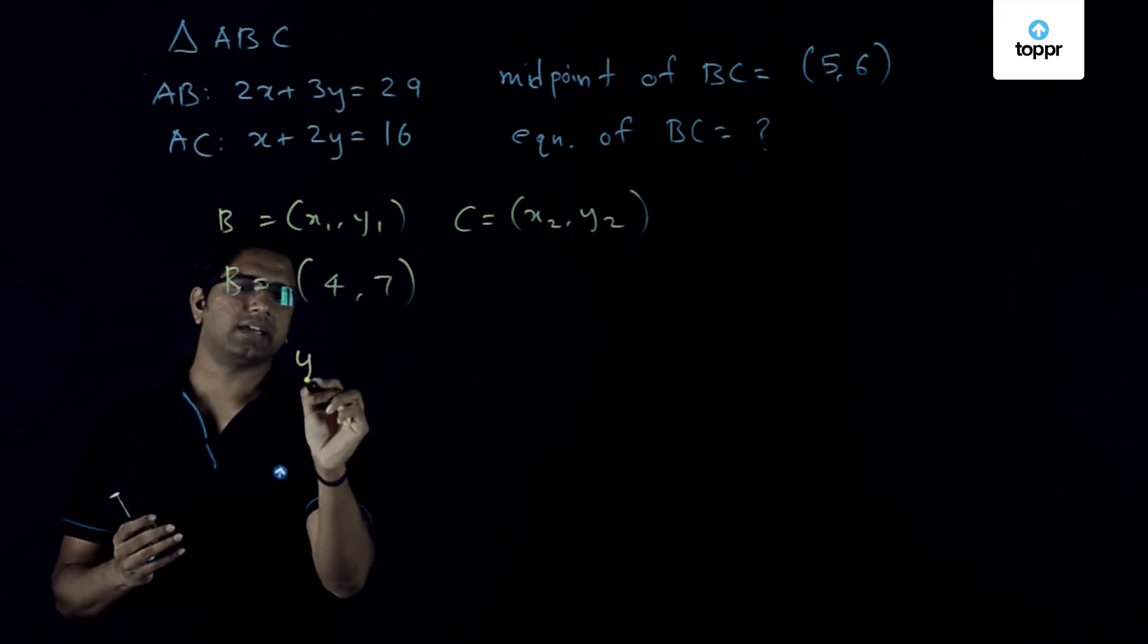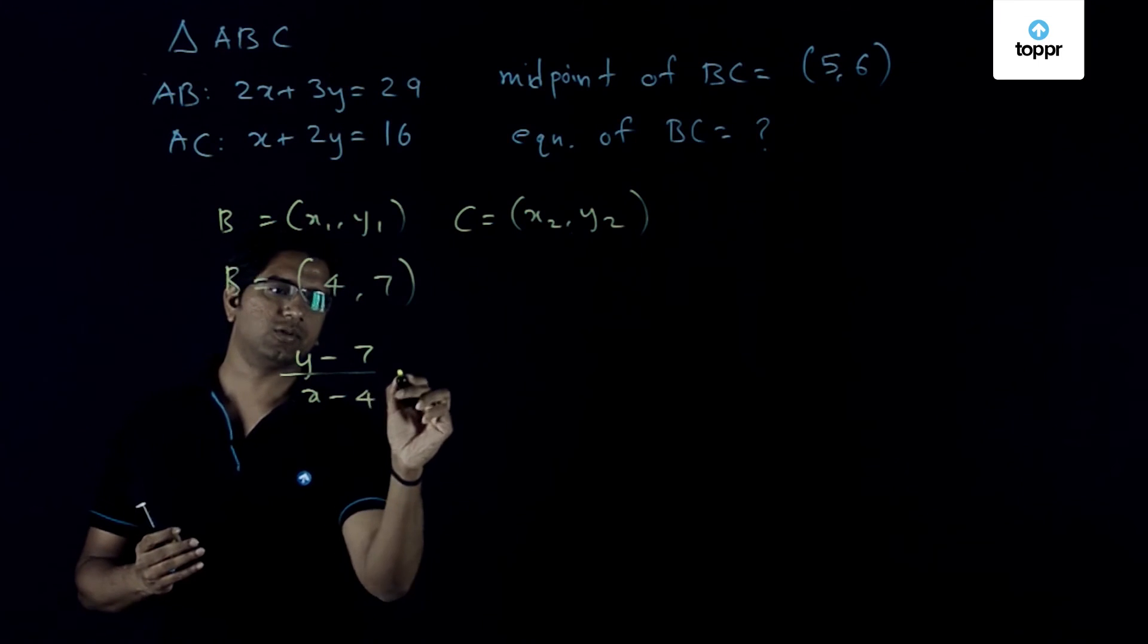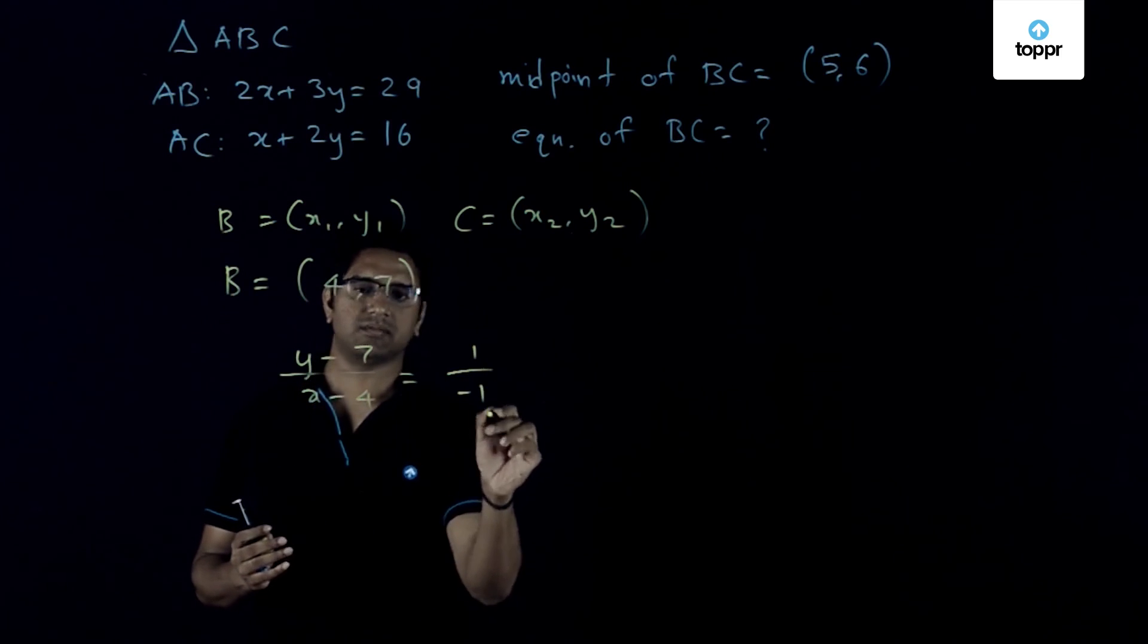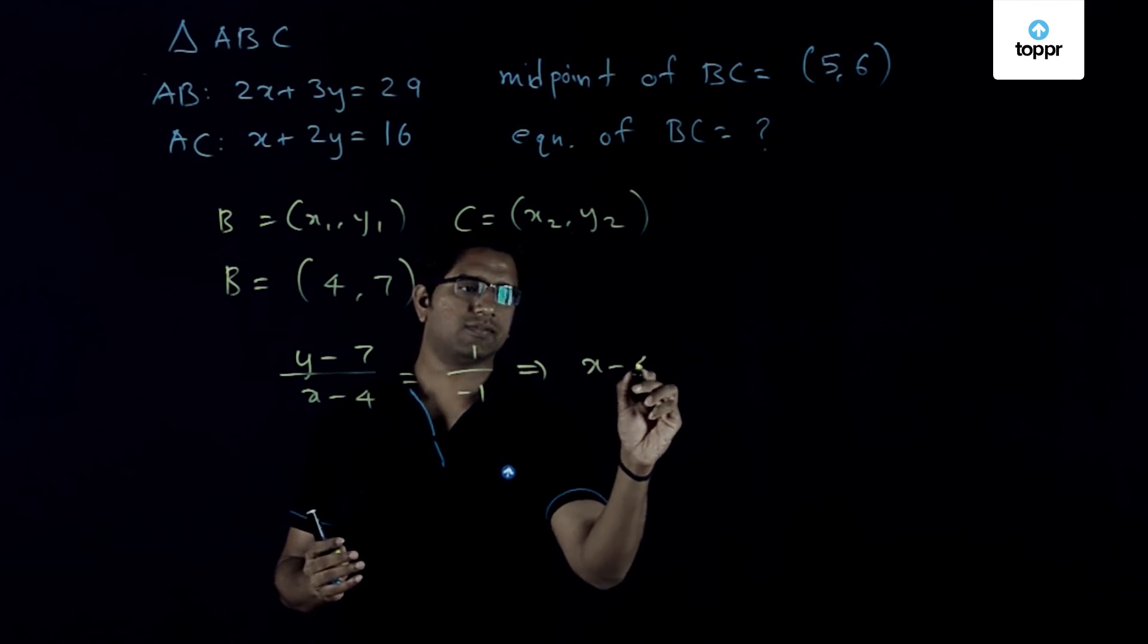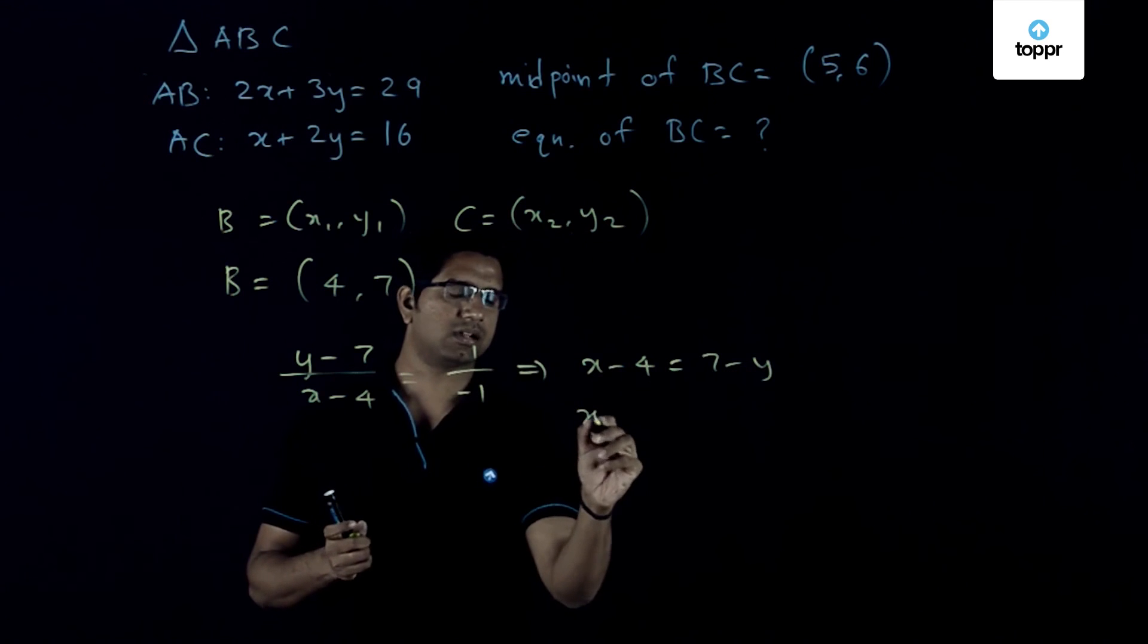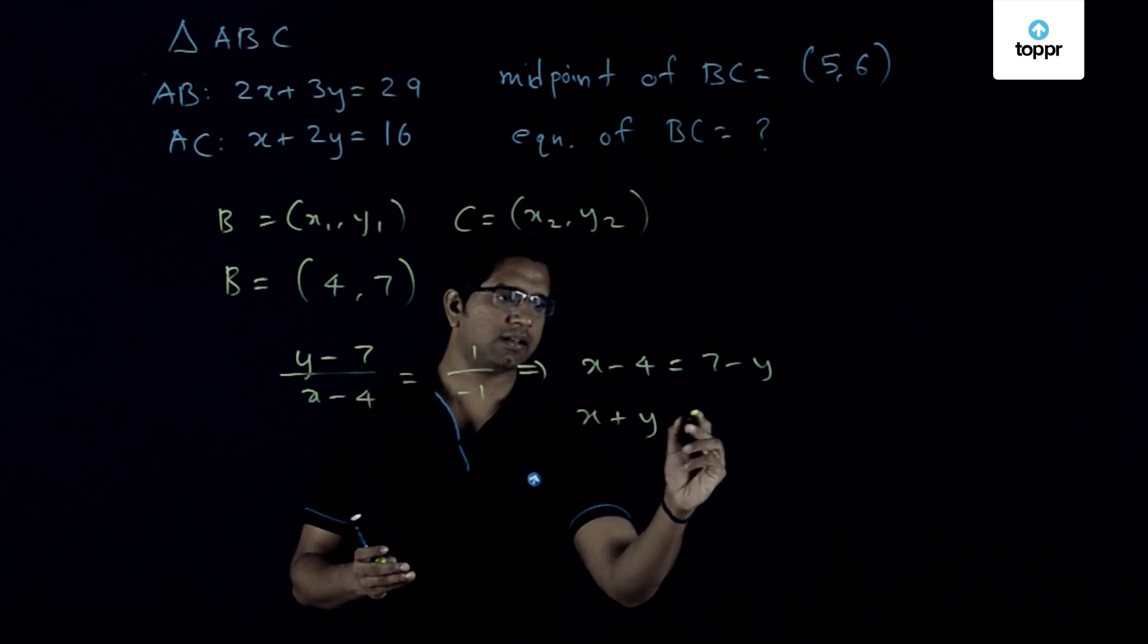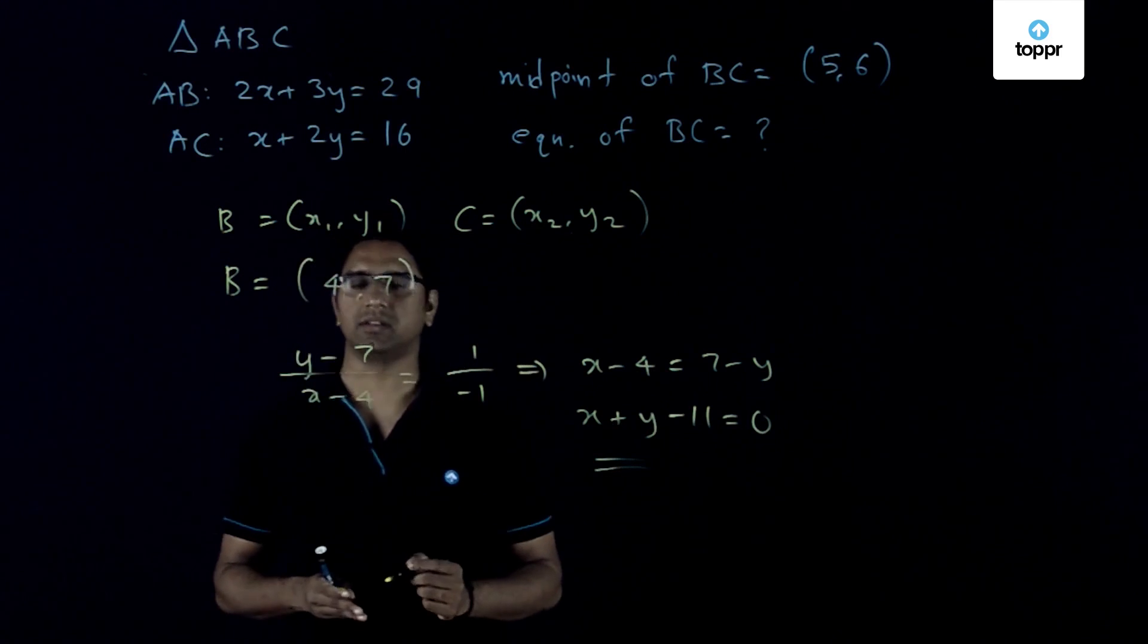We can write it down. (y - 7) divided by (x - 4) equals, so 7 minus 6 is 1 and 4 minus 5 is minus 1, giving us a slope of -1. The equation that we are looking at is x plus y minus 11 equals 0. This is the equation corresponding to the side BC.